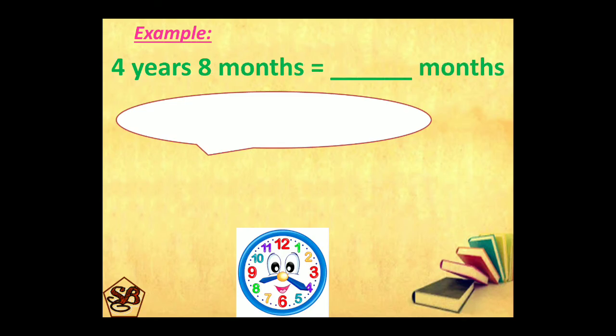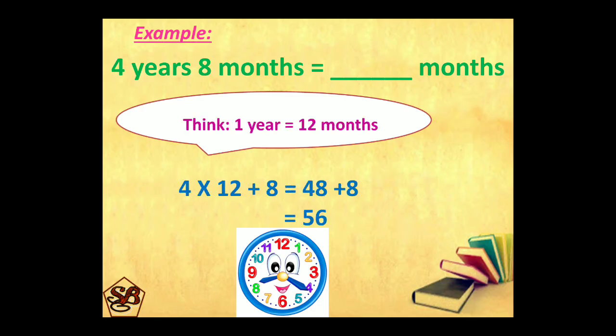4 years 8 months into months. 8 months is already in months. So, we will not convert this. We will convert 4 years and add 8 to it. 4 into 12 plus 8. 4 twelves are 48. Plus 8 is equal to 56. So, 4 years 8 months is equal to 56 months.